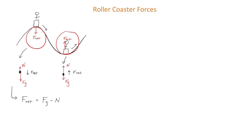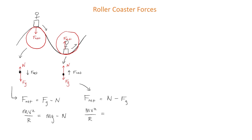Since we're dealing with centripetal force, F_net is replaced with mv²/r and F_g with mg. For the bottom of the valley, F_net = N - F_g. We replace F_net with mv²/r and F_g with mg.